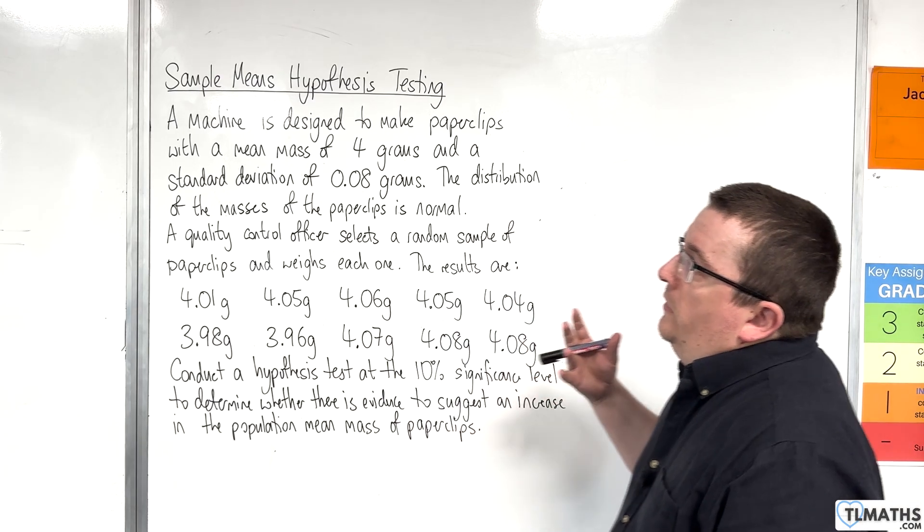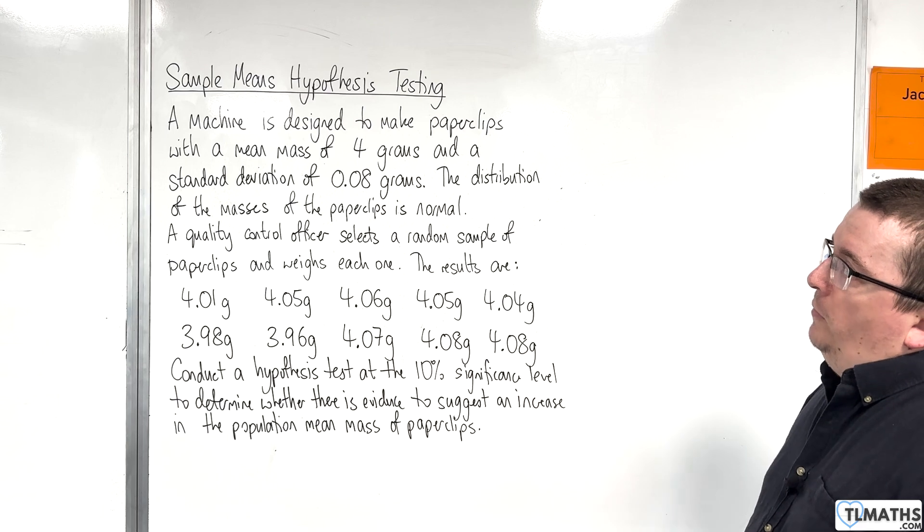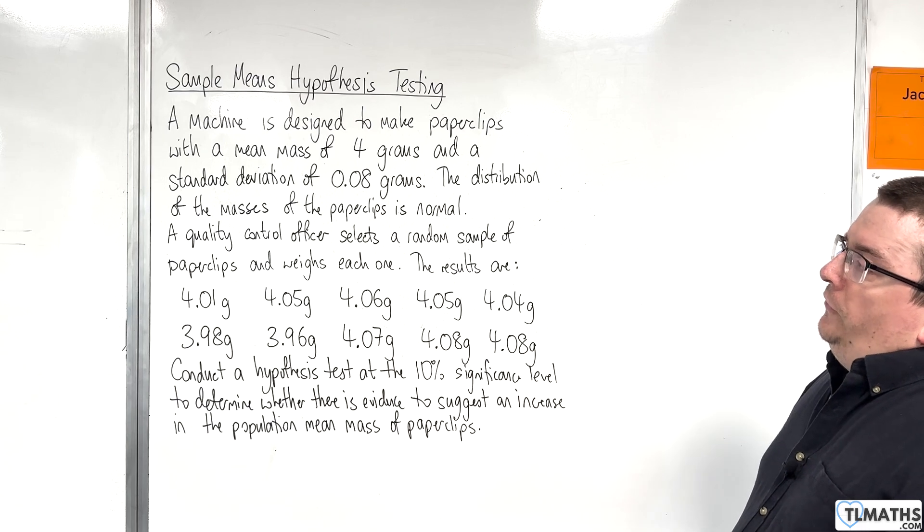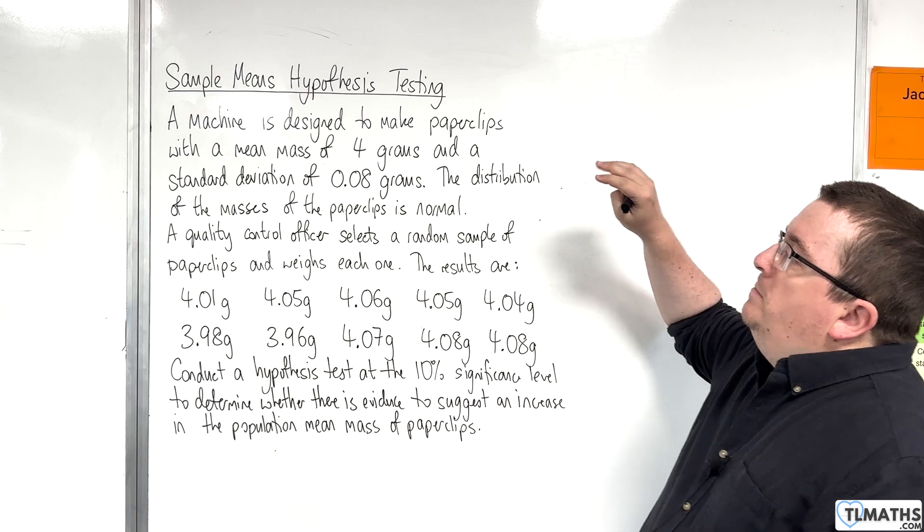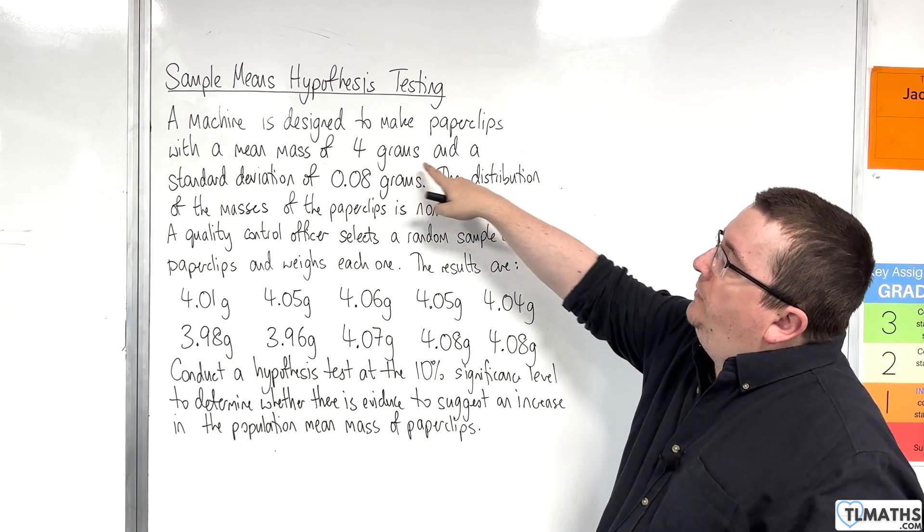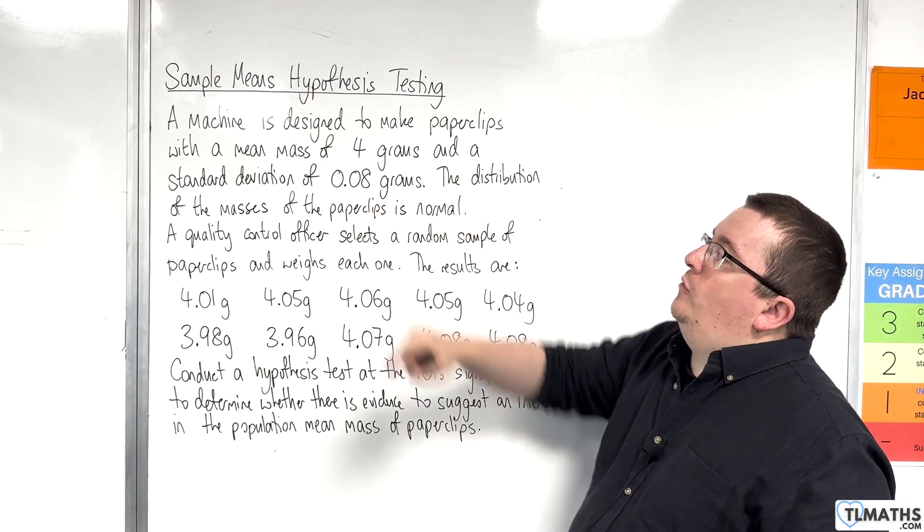In this video we're going through our second sample means hypothesis test example. We have a machine designed to make paperclips with a mean mass of 4 grams and a standard deviation of 0.08 grams.